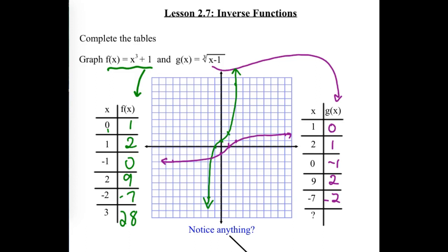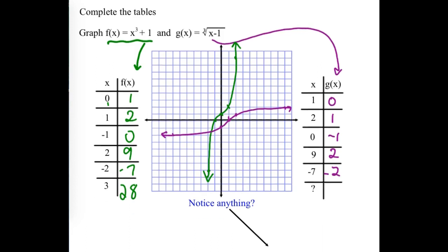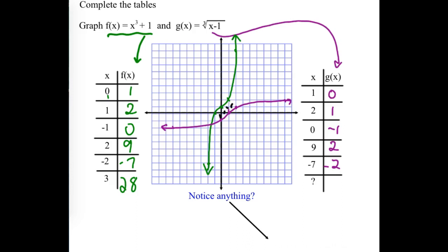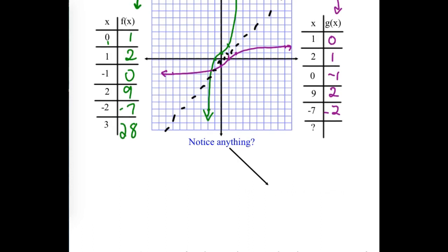Is there a point or a line that we could fold our paper on and have these two graphs match up? Like a parabola is symmetric to the y-axis — we could fold it along the y-axis and the two sides would match. What line would make these two match? A diagonal line through the origin with a slope of one. That line is called y equals x. If we folded along y equals x, those two pictures would look the same. So inverse functions are reflections of each other over the line y equals x.